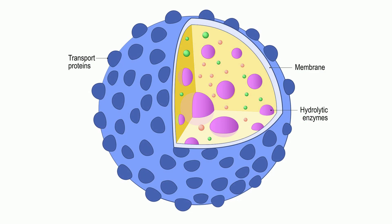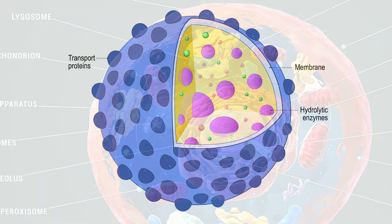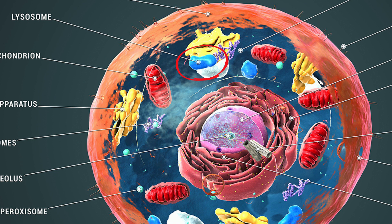Lysosomes help break down old cell parts, digest materials in the cell, and objects that enter. Lysosomes have a single membrane that is filled with digestive enzymes. The enzymes break down complex molecules that include complex sugars and proteins.